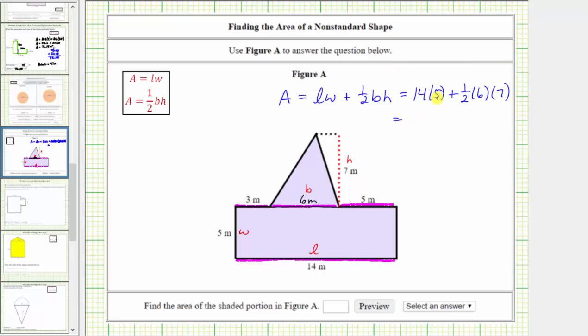Simplifying, 14 times 5 equals 70, plus one-half times 6 is 3, and 3 times 7 is 21. The area of the polygon is 91 square meters.